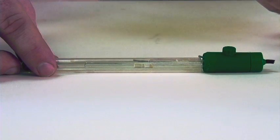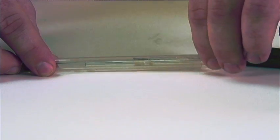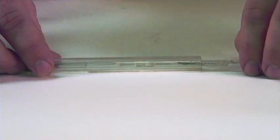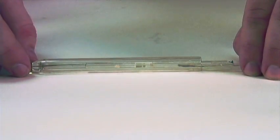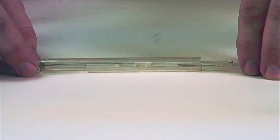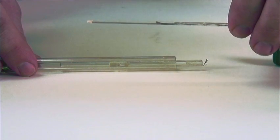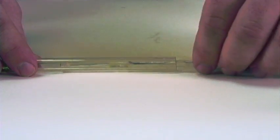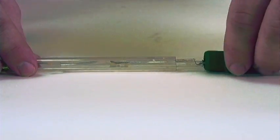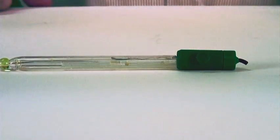This can clog the reference junction, so by adding a second tube in the reference chamber we will only fill the outside reference chamber with 3.5 molar KCL solution without the silver, and on this inner tube we will add the 3.5 molar KCL solution with silver in it so that the silver is not going to come in contact with the heavy metals or tris buffers, preventing a clogged junction.